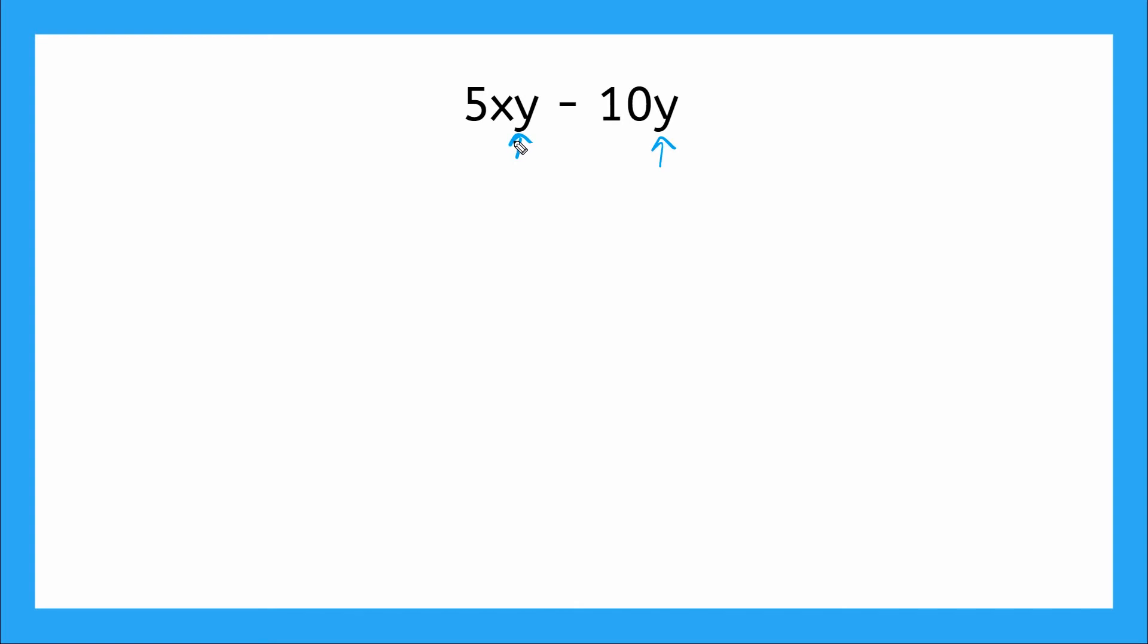So let's see if we have any common factors. Do you notice any right away? Yeah, this variable y is actually a common factor. So right from the start, we can factor this y out. So if we pulled that y out, what would we be left with? 5x from our first term minus 10 from our second term. Do you see how that works? Since we could write both of these terms as having a factor of y,